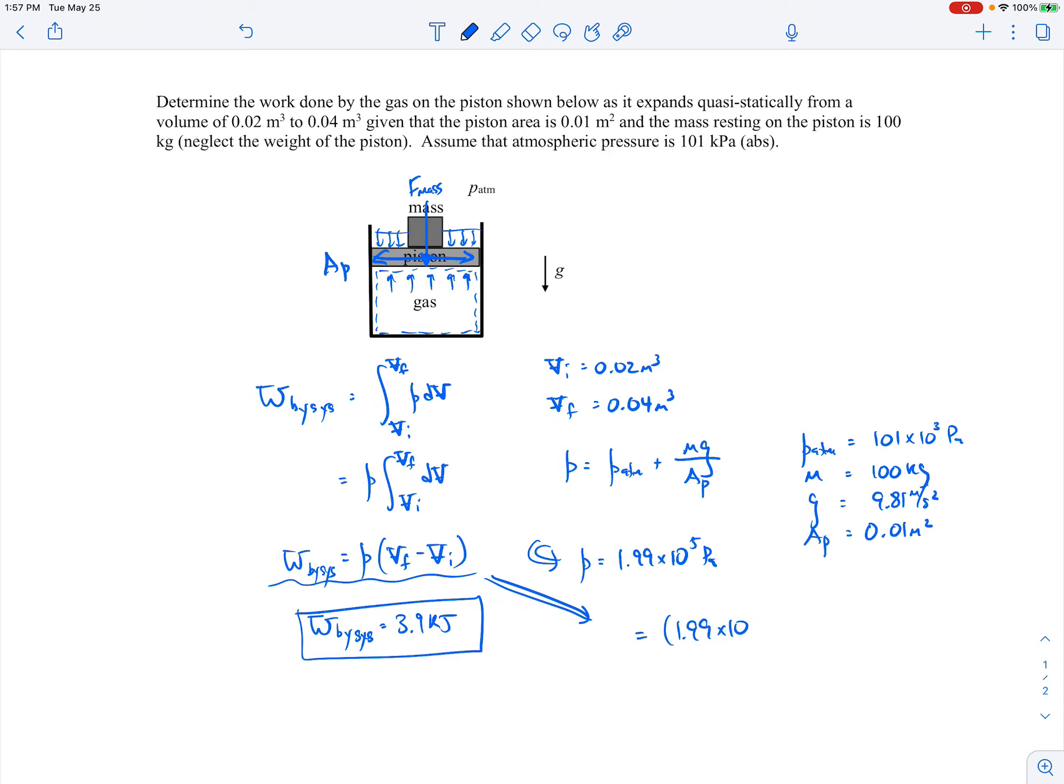So I'm just writing out the intermediate step like that and then you could actually work out the numerical values. If you worked it out, the numerical value would look something like that. And then a pascal is just a newton per meter squared, so then this would be newton over meter squared times meter cubed. That is going to be a newton meter, and a newton meter is a joule.